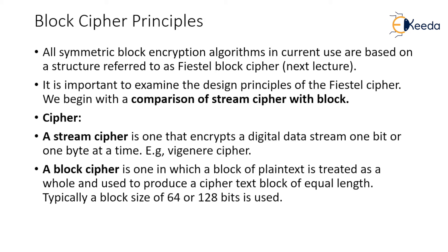It is important to examine the design principles of the Feistal cipher, and for that we should know the difference between a stream cipher and a block cipher. A stream cipher is one that encrypts the digital data stream one bit or one byte at a time. Every bit of the plaintext gets converted into ciphertext — there are no rounds; plain text bits are converted one bit or one byte at a time.